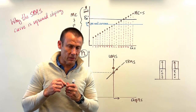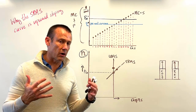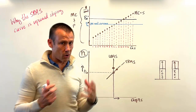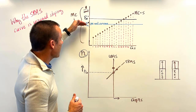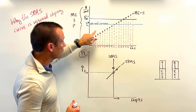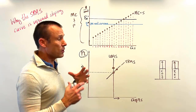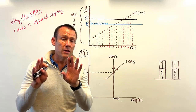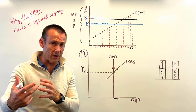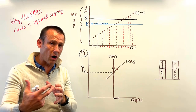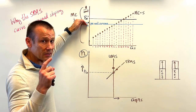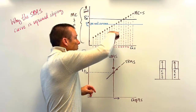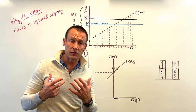Now, what shifts the SRAS curve? Let's go back to supply. The supply curve is the marginal cost curve. When price — per-unit revenue — changes, we move along the supply curve. What causes the supply curve itself to shift is a change in the marginal cost of producing — the cost side of the profit equation. Revenue minus cost equals profit. The cost side is what shifts the curve.